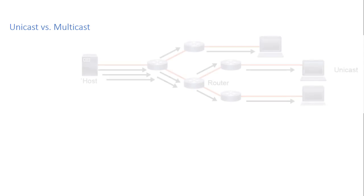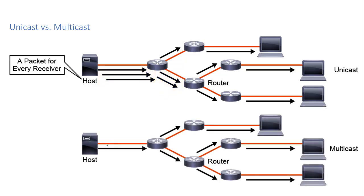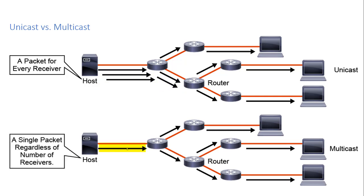Looking at unicast versus multicast traffic: with unicast, there is a packet sent from that host for every receiver, so you can see a lot of packets on each wire at different points on the network. Whereas with multicast, we can send out a single packet from the host, and each router — if that packet is needed on a segment — can replicate that packet and send it out both interfaces. That way, we never have more than one packet on any segment, which reduces congestion and works well for real-time applications with multiple receivers.